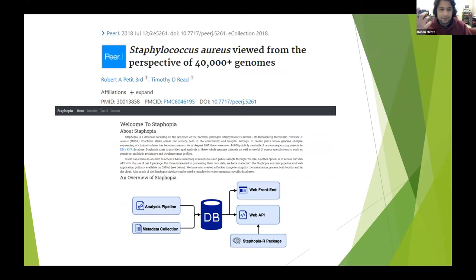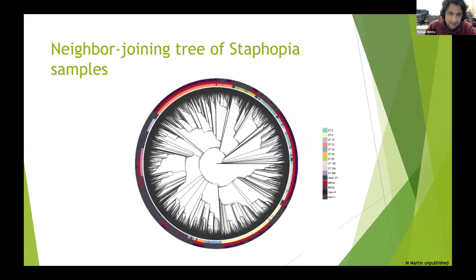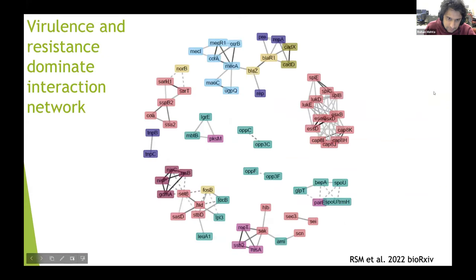I applied this method to a database collected by collaborators at Emory University, Robert Petit and Tim Read, who compiled about 40,000 publicly available Staph aureus genomes into this nice database called Staphopia. I applied my method to both subsets and the whole dataset here. This is that tree I showed earlier, just the tree of the samples.